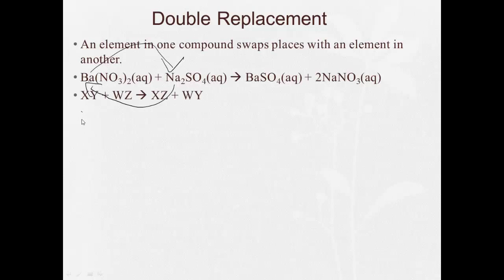General formula: XY plus WZ yields XZ plus WY. The X kicks out the W, and the W kicks out the X, so we end up with XZ and WY.